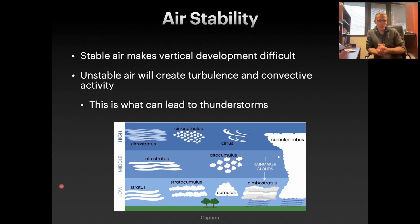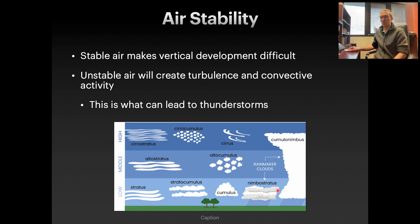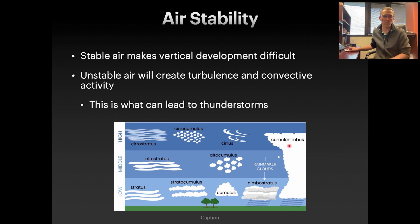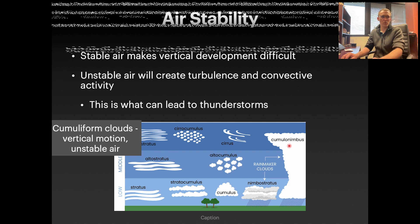Different cloud forms are associated with different air conditions. Layered clouds — whether high or low — are related to stable air. Nimbostratus clouds are also associated with stable air. Cumulus and cumulonimbus clouds are related to unstable air with vertical motion. Stratus clouds show horizontal growth with little to no vertical motion, indicating stable air. Cumuliform clouds indicate vertical motion and unstable air.